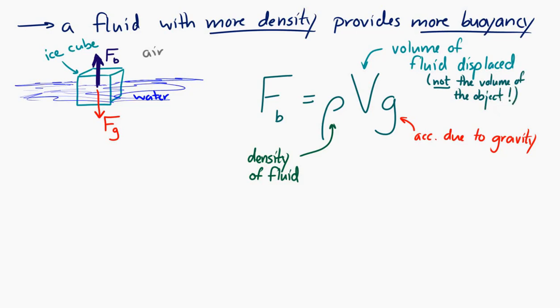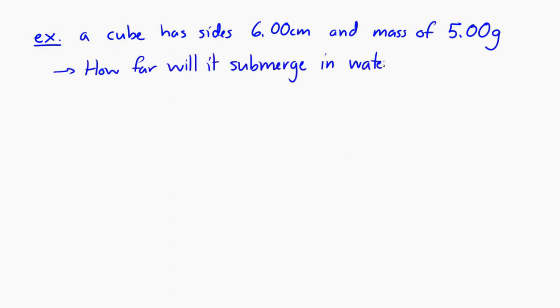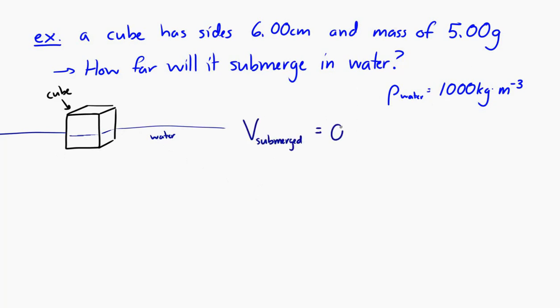So let's say we have a cube, and each side is six centimeters. And that cube has a mass of five grams. And the question is, how far will it submerge when it is in water? Well, let's see. I'm going to draw a little picture right here. And the density of water, by the way, is 1,000 kilograms per cubic meter. So that's useful information to know. The volume of the cube that is submerged would be six centimeters times six centimeters times d. I'm going to call d the depth that the cube has sunk to. So d is right here in the diagram.